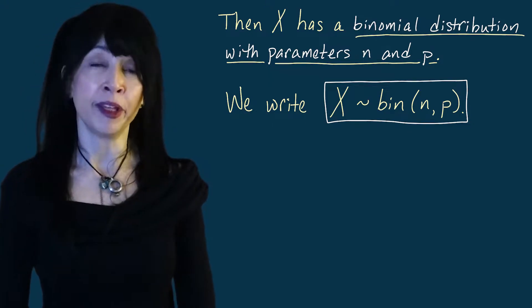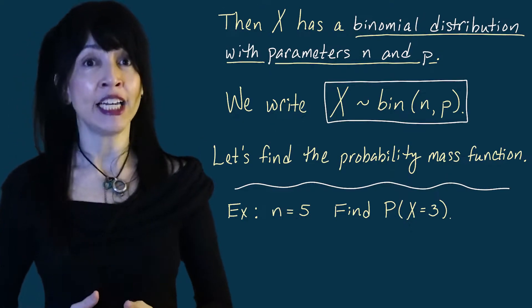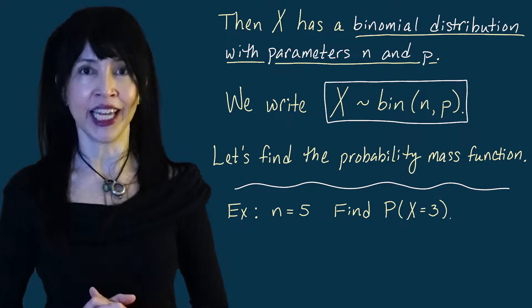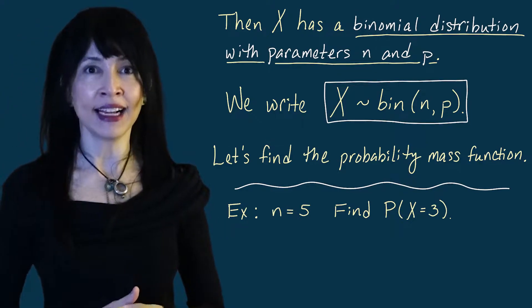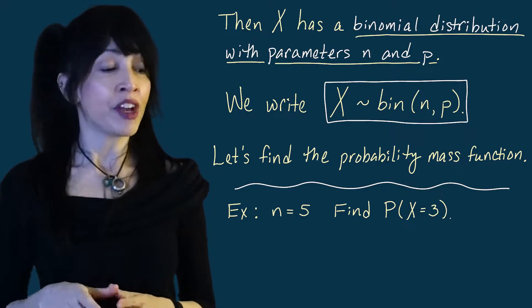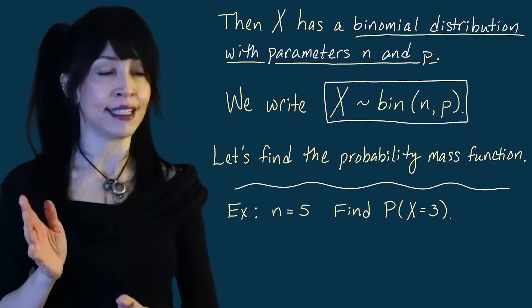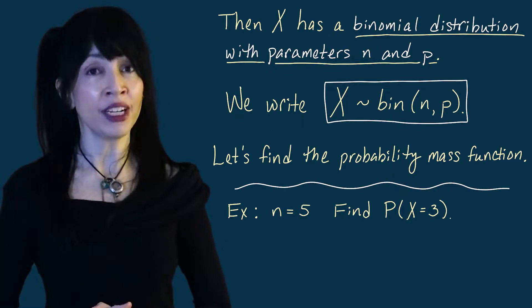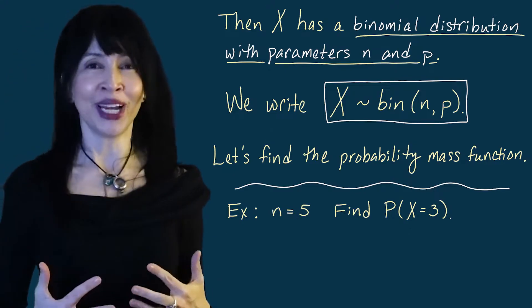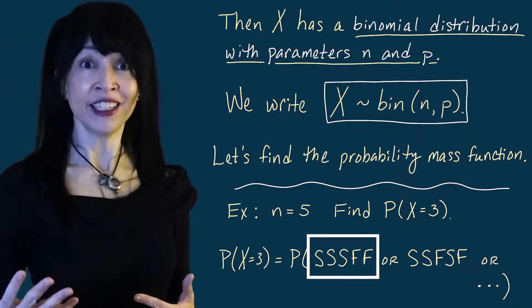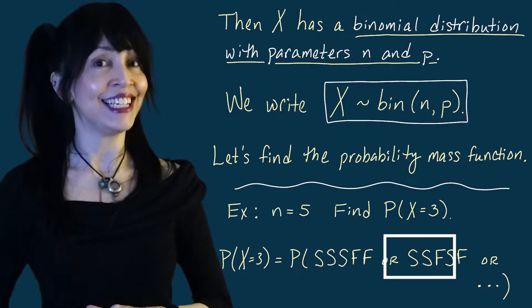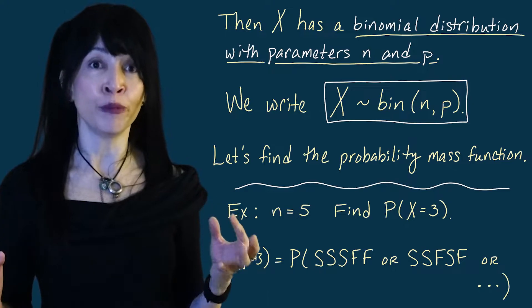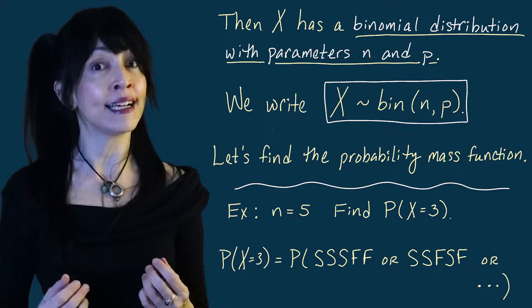So let's find the probability mass function. I'm going to keep p generic, but for simplicity I'm going to fix n, the number of trials, to be five. This is going to be easily generalizable. Let's look at the probability that X equals three. So I've got five trials of an experiment with outcomes success and failure, and I want to know the probability of seeing exactly three successes. There are many ways this can happen — success, success, success, failure, failure, or success, success, failure, success, failure, and the list goes on.